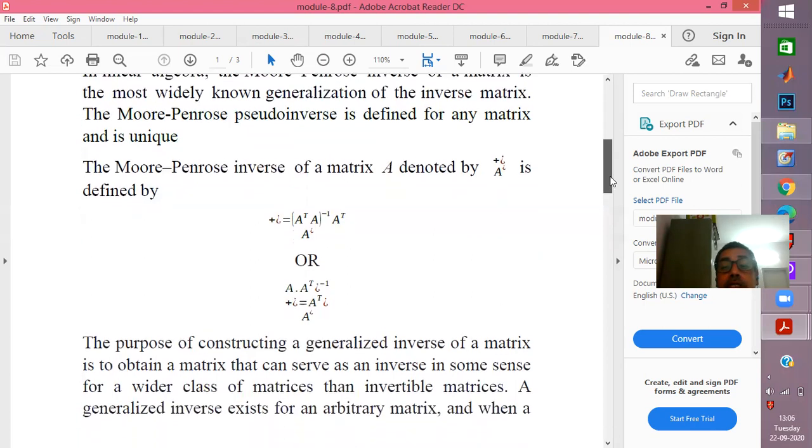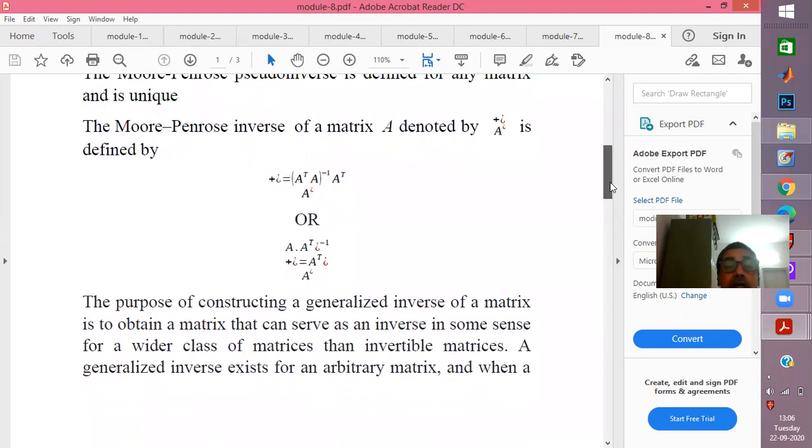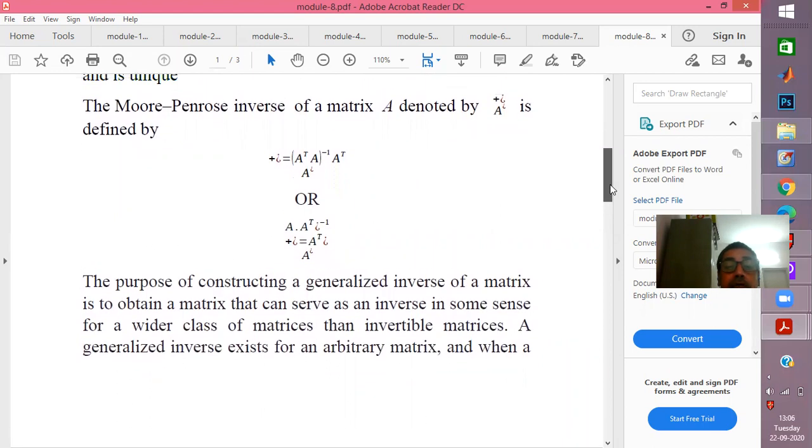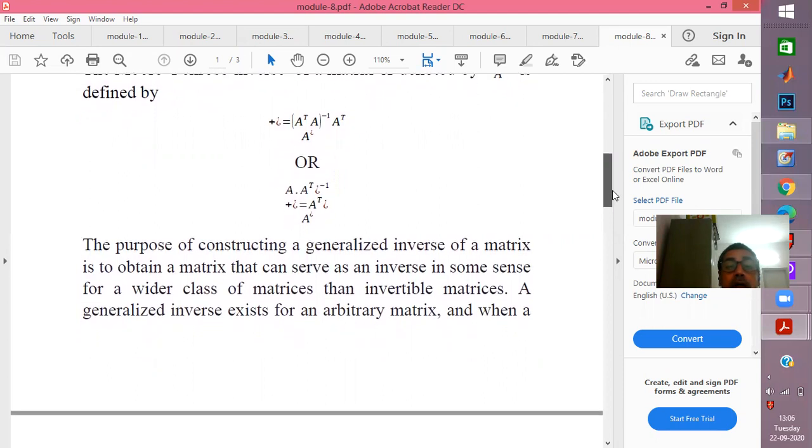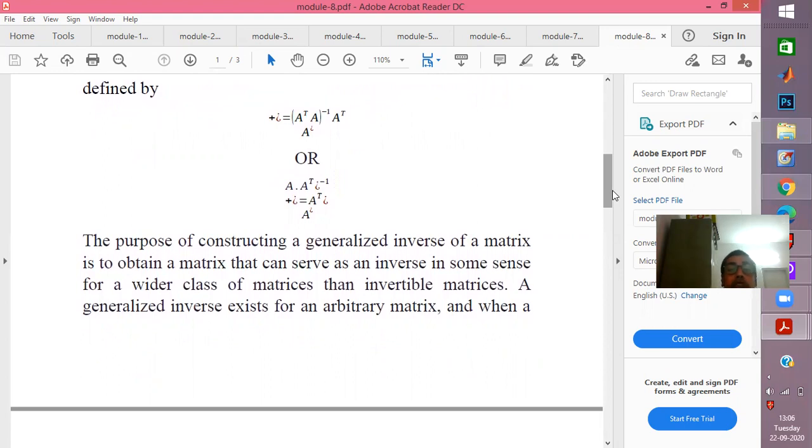The Moore-Penrose inverse is denoted by A plus and is given by the formula A transpose A whole inverse into A transpose. You will have to make sure that A transpose A inverse exists because there is an inversion involved there, so A transpose A should be positive definite. That is a very necessary condition for the existence of the Moore-Penrose inverse. As we find A transpose into A, we check for its positive definiteness either through eigenvalues or other methods.